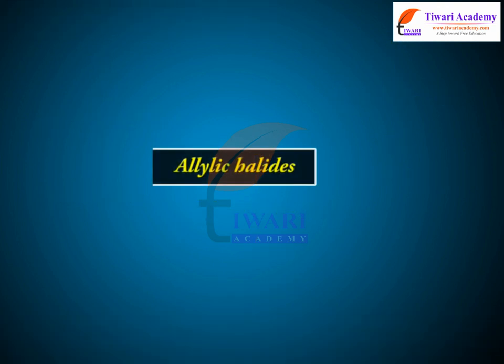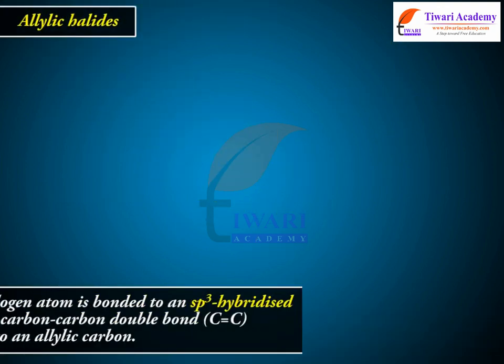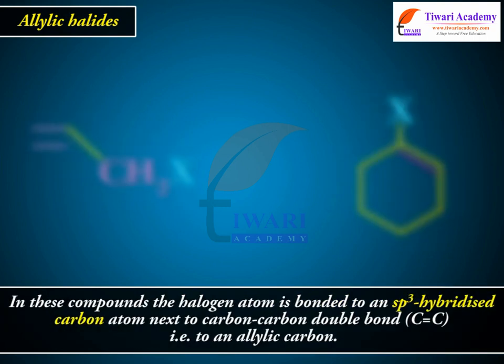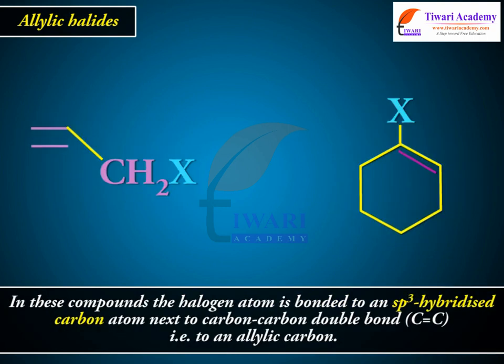Allylic halides. In these compounds, the halogen atom is bonded to an Sp3 hybridized carbon atom next to a carbon-carbon double bond, i.e., to an allylic carbon.